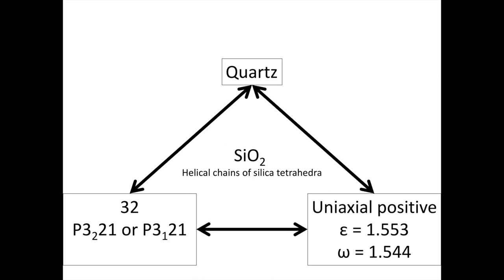Our quartz is defined by its chemistry and structure. The chemistry is SiO2, and the structure consists of helical chains of silica tetrahedra. Check out a website like MnDAT for much better structure models of quartz. The chemistry and structure result in the space group and point group symmetries of our quartz. We think about space group symmetry at the micro scale and point group symmetry at the macro scale. We have two different space group symmetries for quartz, dependent upon which direction those helical chains of silica tetrahedra spiral.